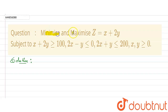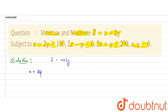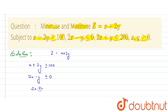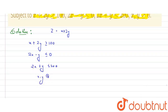In this question, we need to minimize and maximize the expression Z = x + 2y, subject to the constraints: x + 2y ≥ 100, 2x − y ≤ 0, 2x + y ≥ 200, and x, y ≥ 0. We need to find both the minimum and maximum conditions.